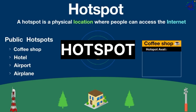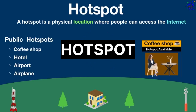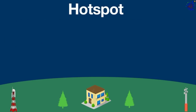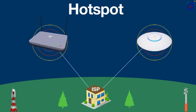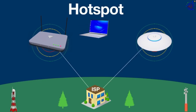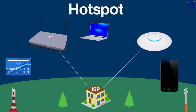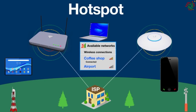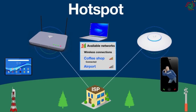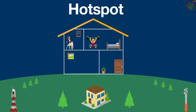A coffee shop is the most common place for having a hotspot where customers can have internet access. Hotspots are created using Wi-Fi routers or wireless access points that are connected to an ISP. These devices broadcast Wi-Fi signals so that people nearby can connect and access the internet — they simply have to enter the network name and password, if it has one, because some public hotspots are open and some require a password.